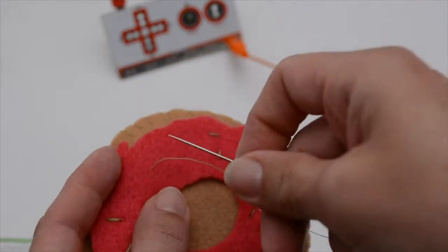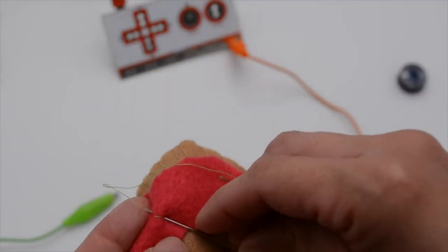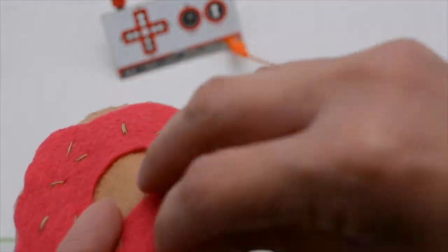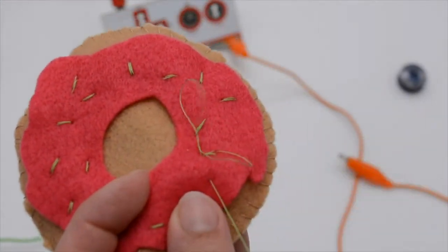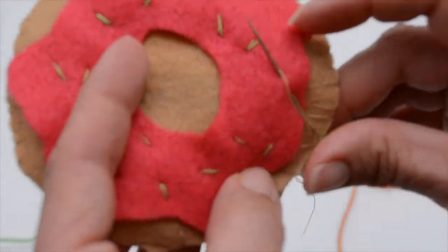And to sew your sprinkles, now that you're done, you're just going to take some contrasting thread and sew through that top layer. And this will actually sew your frosting onto the top doughnut, but it will also make really cool cute little sprinkles.